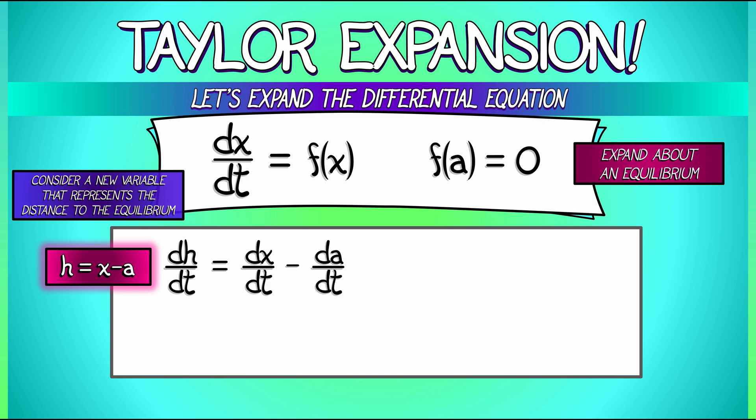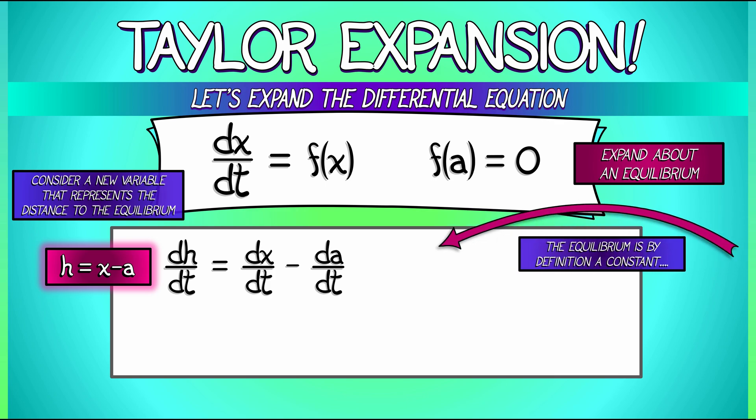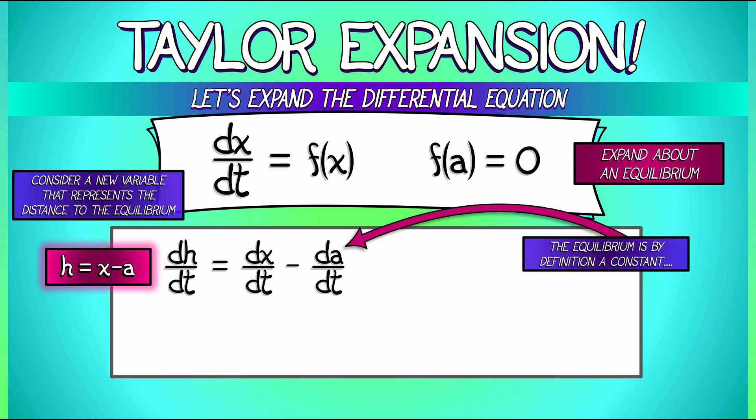But by definition, a, the equilibrium, it's constant. So da/dt is zero. That vanishes and we are left with dx/dt.